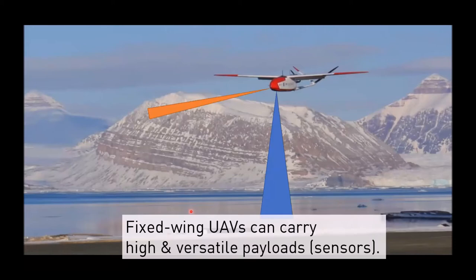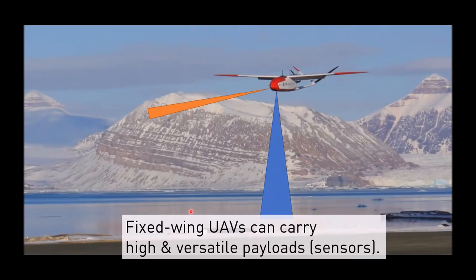If you want to map a big glacier or large areas of sea ice, this is really the solution, at a fraction of the cost of a manned aircraft operation. The second advantage is they can carry a lot of weight — a lot of different payloads — which you can swap out. People are using high-resolution cameras, hyperspectral cameras for oceanography or vegetation monitoring, LiDARs, and even small radars and SAR sensors that give you very similar data to what many satellites provide.